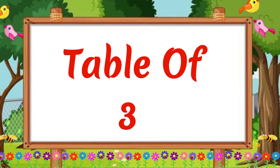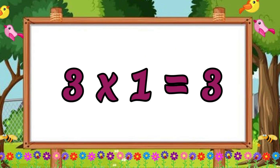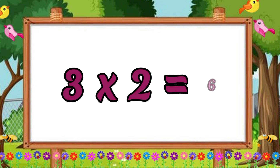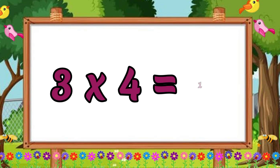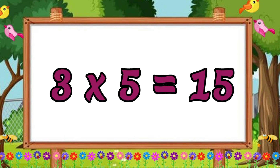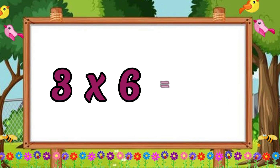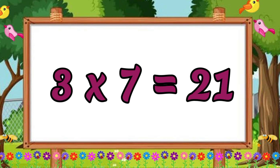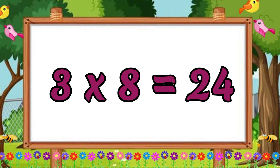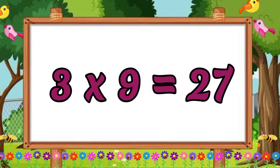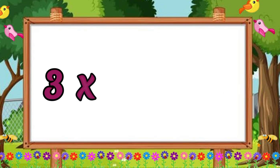Table of three. Three ones are three. Three ones are three. Three twos are six. Three twos are six. Three threes are nine. Three threes are nine. Three fours are twelve. Three fours are twelve. Three fives are fifteen. Three fives are fifteen. Three sixes are eighteen. Three sixes are eighteen. Three sevens are twenty-one. Three sevens are twenty-one. Three eights are twenty-four. Three nines are twenty-seven. Three tens are thirty.